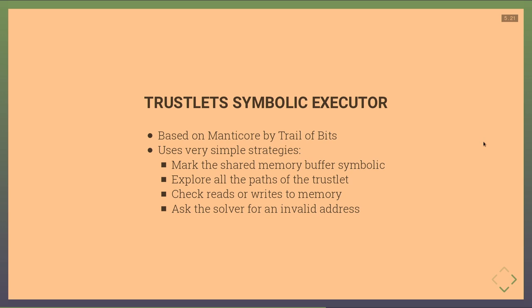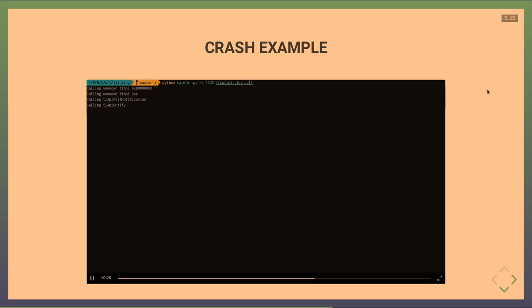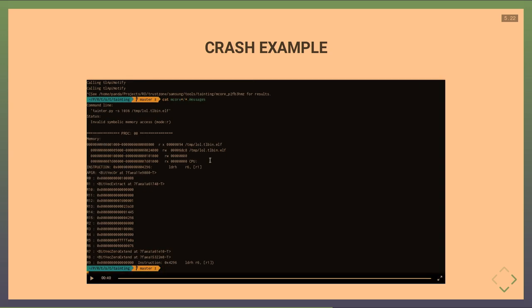We also implemented symbolic execution using Manticore by Trail of Bits. The strategy: mark the TCI buffer as symbolic, explore different paths and command handlers, check reads and writes to memory, and detect invalid address accesses. In the demo, Manticore running on a trustlet produces a crash result showing R1 being dereferenced with a user-controlled value taken directly from the TCI buffer — a strong starting point for exploitation analysis.